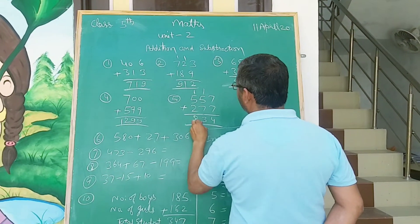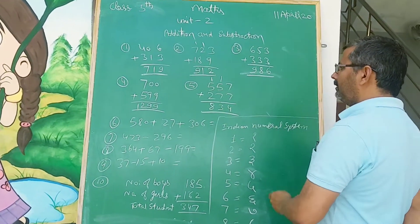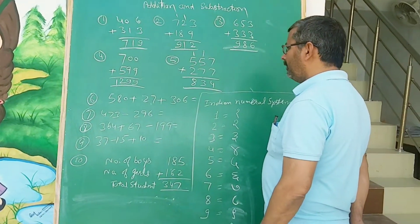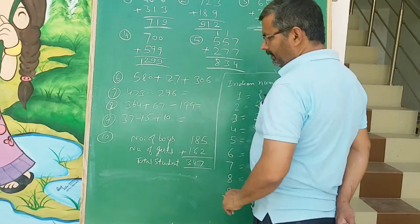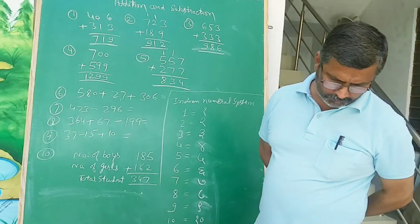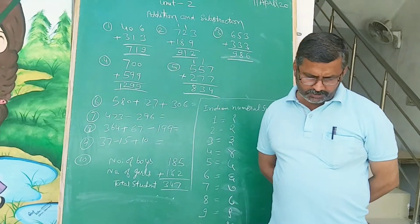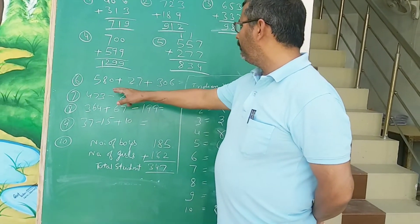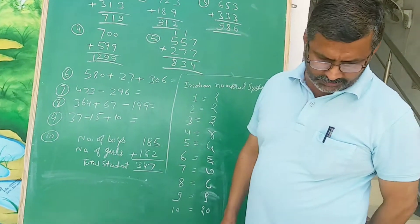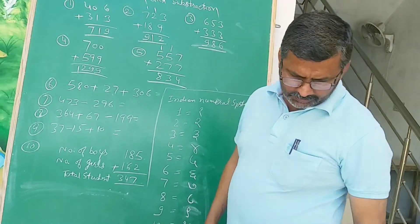These solutions are on the board in front of you. Next, these solutions are question fifth, sixth. Solutions are 580 plus 27 plus 306 equals 930.